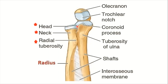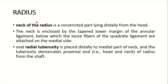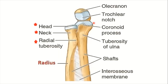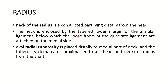The head of the radius articulates medially with the radial notch of the ulna, and laterally it is covered by the annular ligament all around. The neck of the radius is a constricted part lying distally from the head. The neck is enclosed by the upper margin of the annular ligament, below which the loose fibers of the quadrate ligament are attached on the medial side.